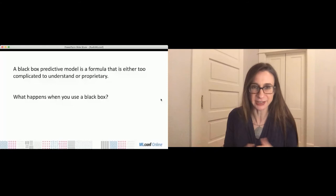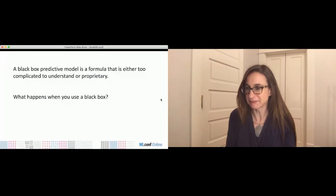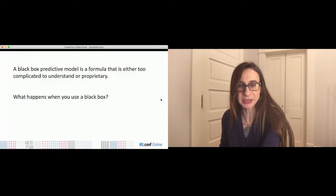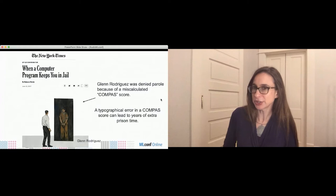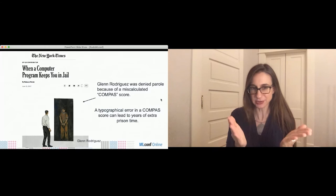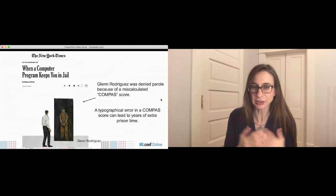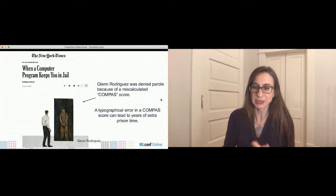What happens when you use a black box? There are a lot of bad things that could happen. The first example: you could get several extra years of prison time. This is a story from the New York Times about Glenn Rodriguez, who was sent to prison at a young age for a crime he committed as a kid. He was denied parole 17 years later because someone had incorrectly entered information into a black box predictive model used to predict whether he would commit a crime in the future.